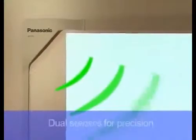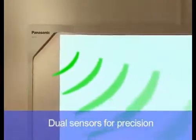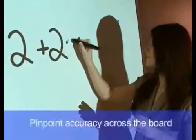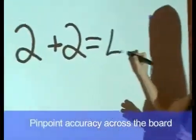Elite Panaboard's state-of-the-art dual ultrasonic and infrared sensors are under a protective cover in the top left corner. These sensors detect the position and movement of the electronic pen. They deliver pinpoint accuracy across the whole board.